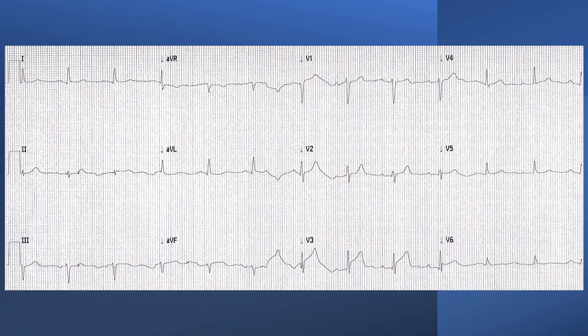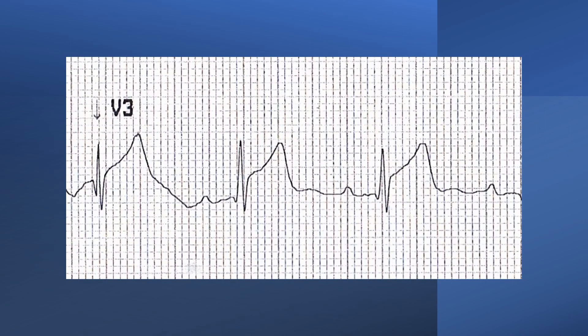Looking at this ECG, there isn't much that will strike us from the analysis point of view. We can see that the axis — looking at lead 1 and AVF — lead 1 is pointing down, so that is a left axis deviation. Maybe there is a little bit of first-degree heart block. No other significant findings except one thing, especially when talking about ischemia: V3 ST elevation. Looking at V3, this is a scary-looking ST elevation — about 3 millimeters — which is definitely significant.